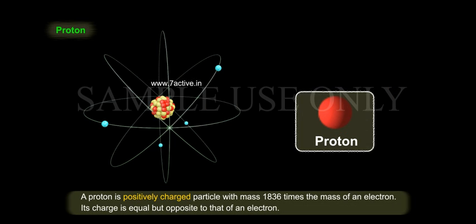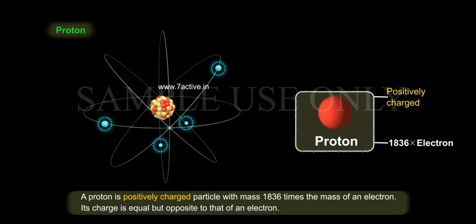A proton is positively charged particle with mass 1836 times the mass of an electron. Its charge is equal but opposite to that of an electron.